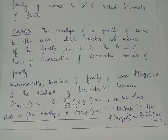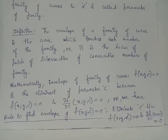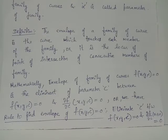Now let us define what an envelope is. When consecutive members of a family of curves intersect, joining the points of intersection of these consecutive members traces a new curve. This new curve, which is the locus of points of intersection of consecutive members of the family, is known as the envelope of the family of curves. In particular, the envelope is a curve which touches every member of the family.